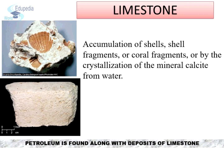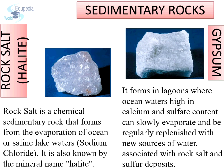Limestone is the most important chemically formed sedimentary rock. Limestone is formed by the accumulation of shells, shell fragments, or coral fragments, or by the crystallization of the mineral calcite from water. A point to be noted here is that petroleum deposits are found along with deposits of limestone. Rock salt or halite is a chemically formed sedimentary rock that forms from the evaporation of ocean or saline lake water — i.e., sodium chloride. It is also known by the mineral name halite.